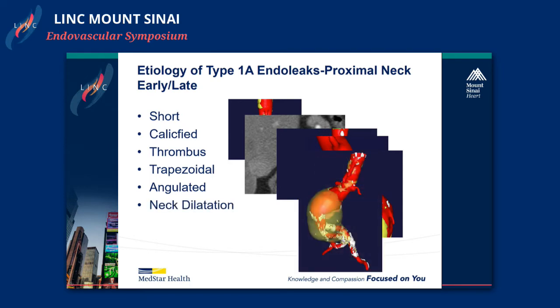We also know that over time these aortic necks can dilate, and when they dilate, a type 1a can develop. With those grafts without active fixation, those grafts can actually drop down into the aneurysm sac.